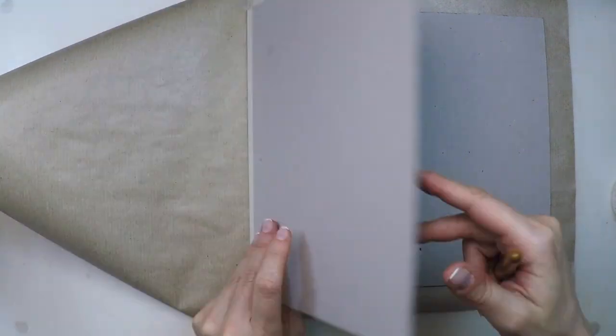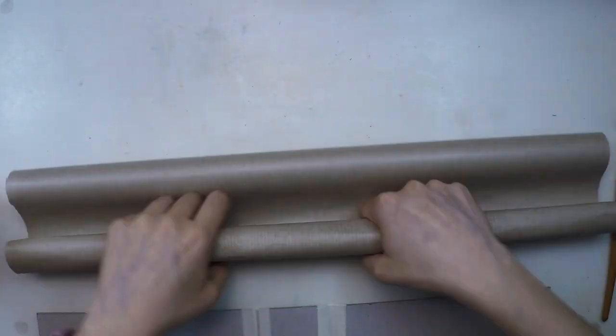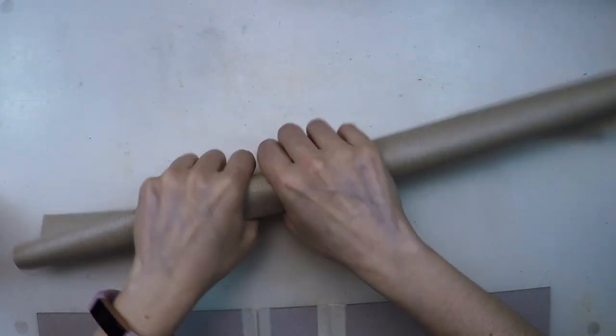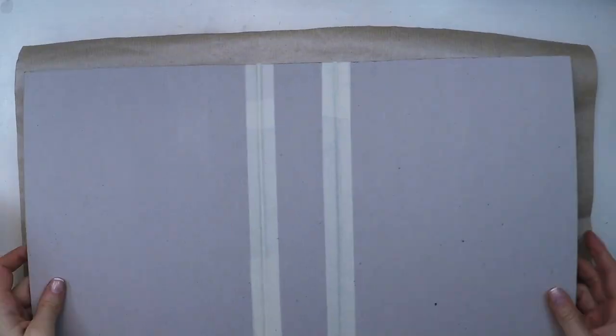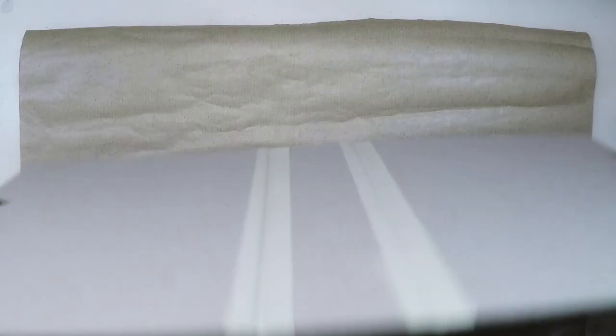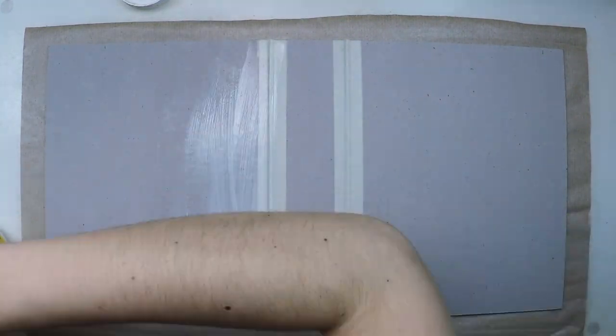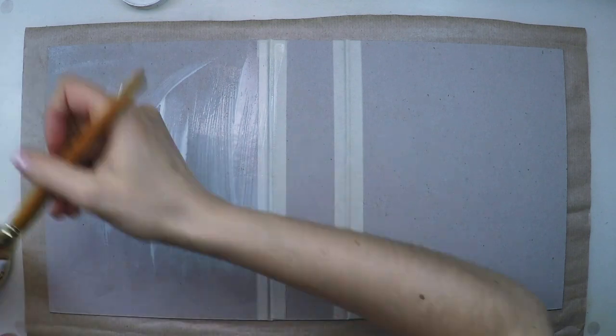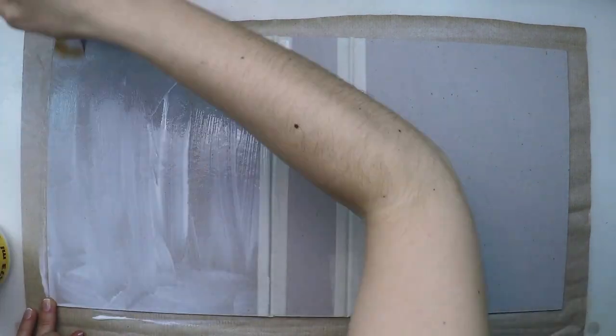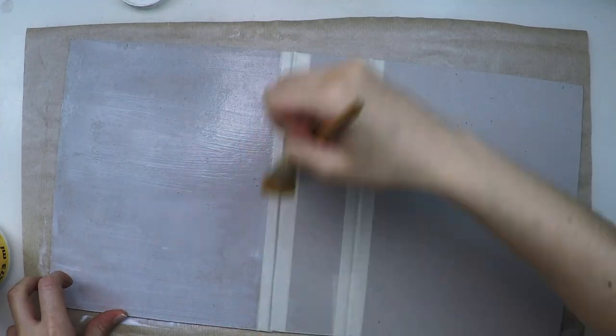So with some Mod Podge and that wrapping paper, it's very curved so I'm just making sure that I wrap it the other way around so now it's a bit more flat. And then with the Mod Podge and acting very fast because Mod Podge dries very quickly, I extend it on the first part of my cover and press it down against the paper.